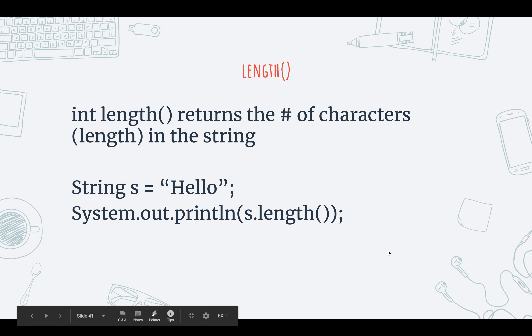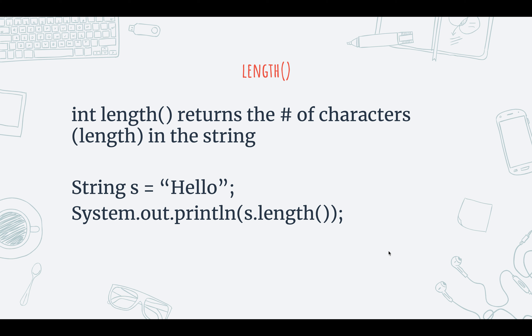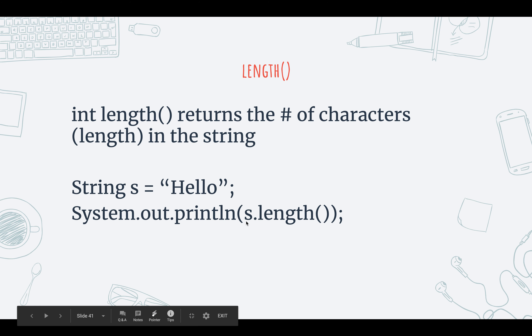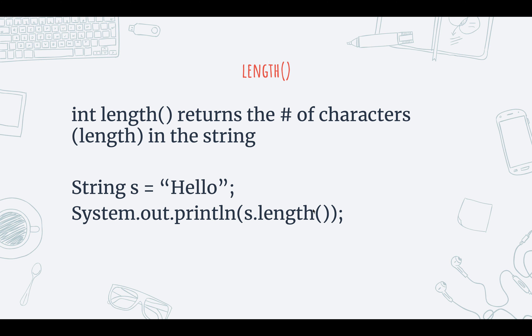The length method of the string class does exactly what you would think it does — it returns an integer representing the number of characters in the string. So if you have string s equal to 'hello' and you access the length method of that object with `s.length()`, how many characters are there? One, two, three, four, five — this also includes spaces. So it would return five because that's how many characters we have. Spaces are counted as characters.